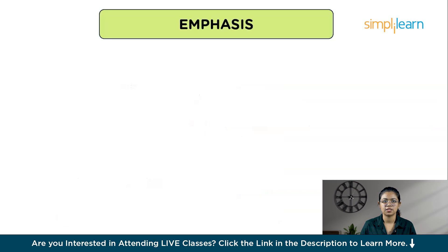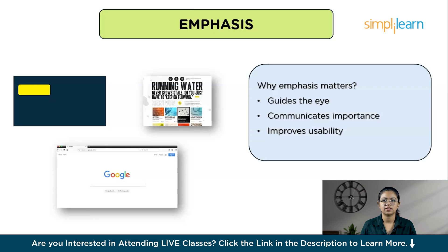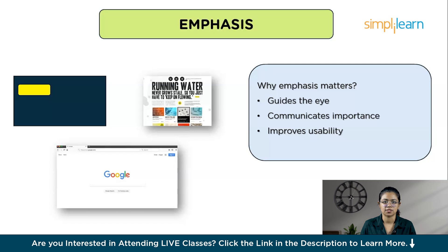Emphasis in composition is about making certain parts of a design stand out so they catch the viewer's attention first — showing what is most important on a page or screen. Emphasis directs the viewer's attention to key information or important actions, highlights critical elements, and helps users navigate and understand the interface more easily. To create emphasis, you can use previously discussed components such as contrast, size, position, white space, and more.